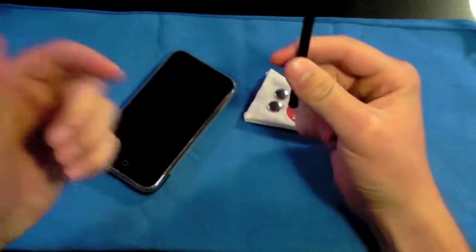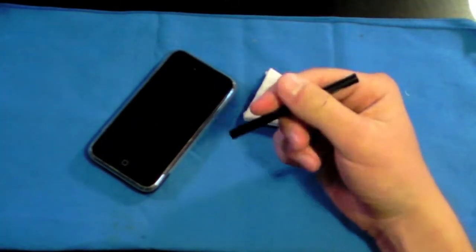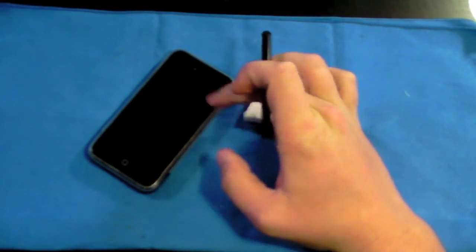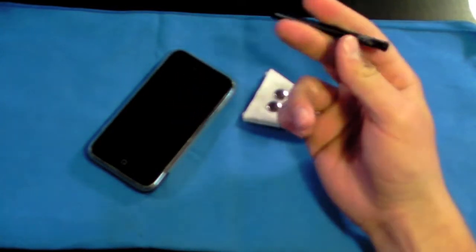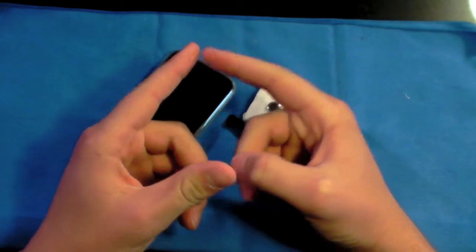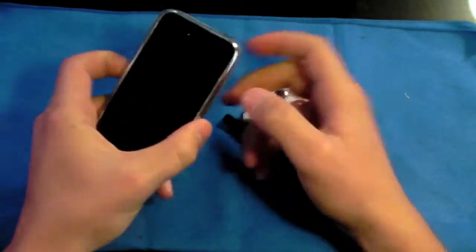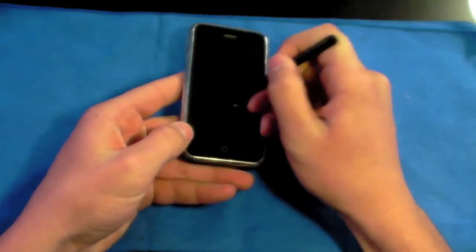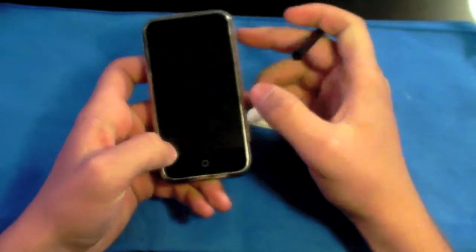Capacitive touchscreens respond to a transfer of electrons I believe between your finger and the screen and that's how it registers touch. Whereas resistive touchscreens respond from two different films that when pressed together they send a signal. So that's why there's certain touchscreens that you have to push really hard and you can use a stylus to push down on. Those are resistive touchscreens.